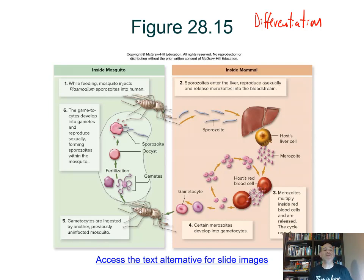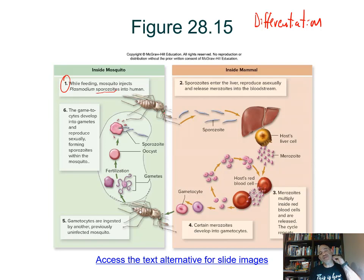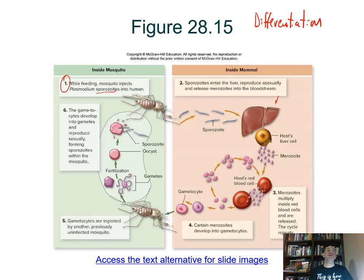Starting with the mosquito — Anopheles — carrying a stage in the life cycle called sporozoites. The sporozoites develop within the salivary glands of the mosquito. When the mosquito bites, sporozoites come out into the tissue of the human or animal host, circulate around the body, end up in an organ like the liver, and penetrate into liver cells.